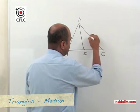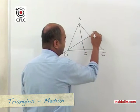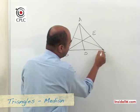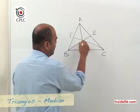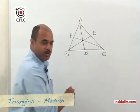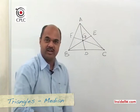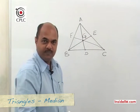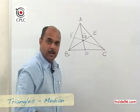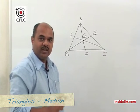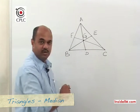If we draw all three medians, the three medians pass through one common point which is called the centroid, normally denoted as G.